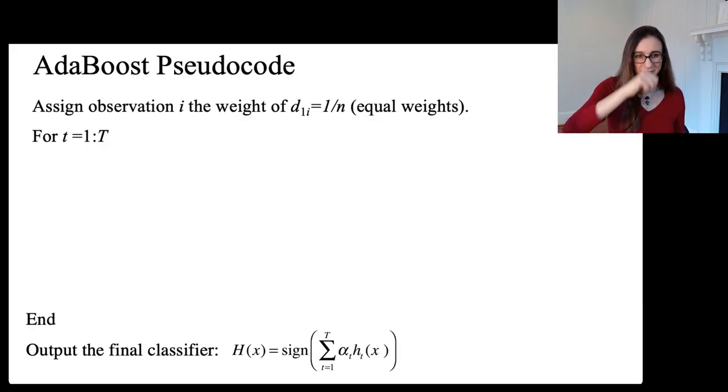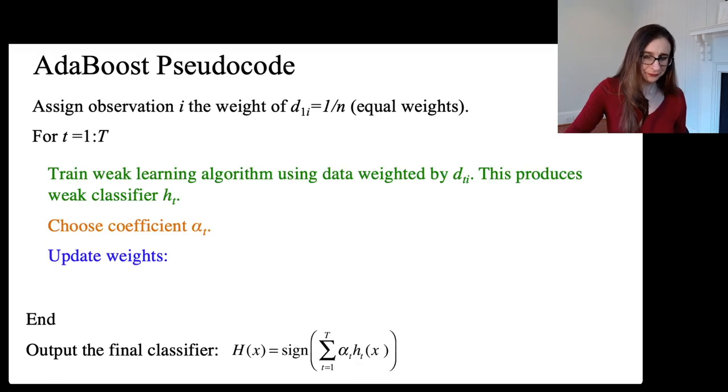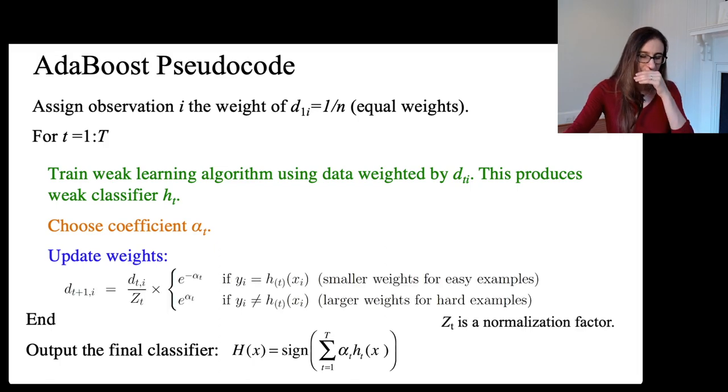All right, so let's go through the pseudocode for AdaBoost with a little bit more detail here. And so, we have these three steps in the loop. We train the weak learning algorithm using the weighted data. We choose the coefficients and we update the weights. Now, this is the weight update. So, you take the weight that you had, d_ti, in the current iteration.